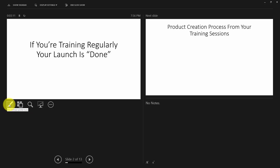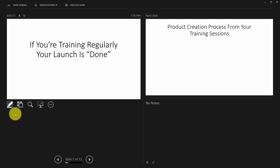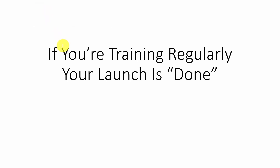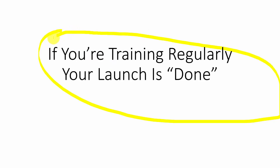For example, if we choose the pen tool and we choose to use the highlighter, we can switch the display view. One of the things you'll notice is that we can highlight things on the screen and change these things very easily from our presenter view. For example, if we'd rather use the laser pointer, that's available as well.